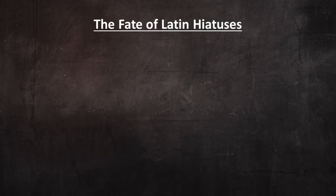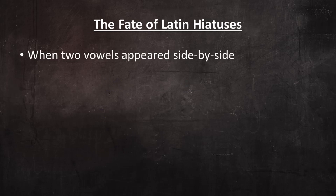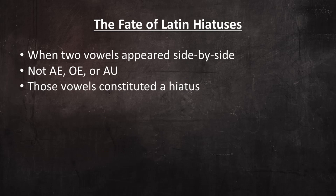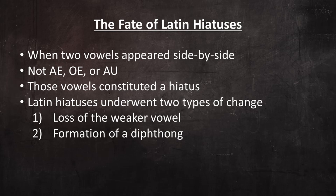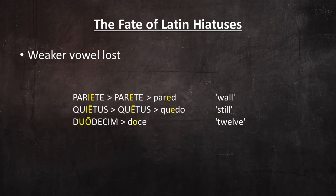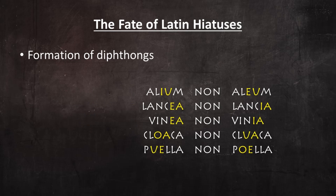The fate of Latin hiatuses: in Latin, when two vowels appeared side by side that were not AE, OE, or AU, those vowels constituted a hiatus, which means that they were pronounced as separate syllables. In the transition to Spanish, Latin hiatuses underwent two types of change: the loss of the weaker vowel, and more commonly, the formation of a diphthong. Observe these examples where the weaker vowel was lost. With regard to the formation of diphthongs, the Appendix Probi attests to the total confusion of front vowels and back vowels in hiatuses.